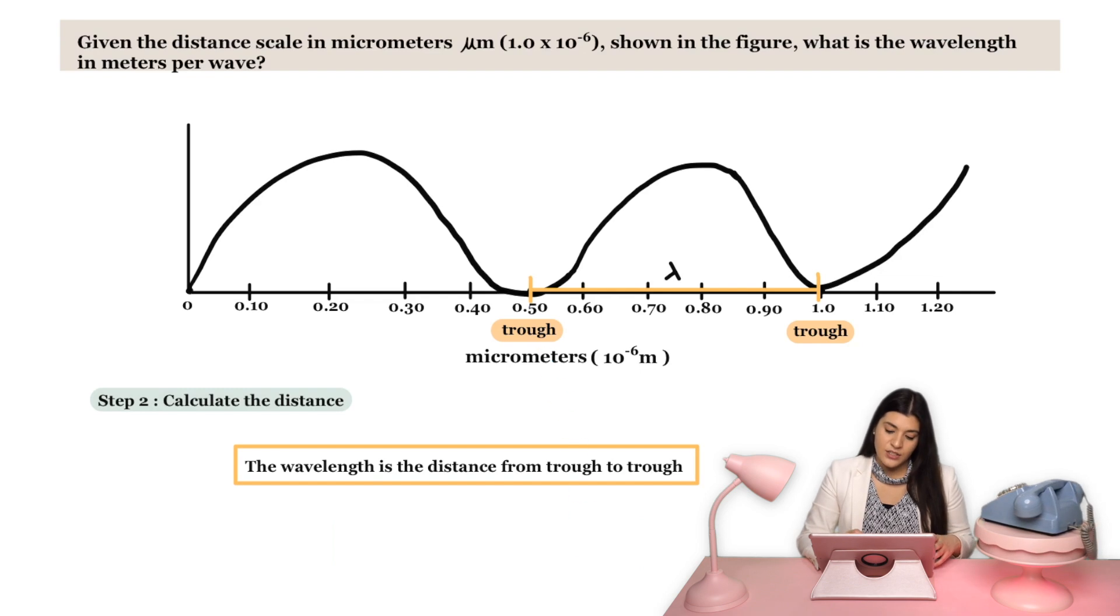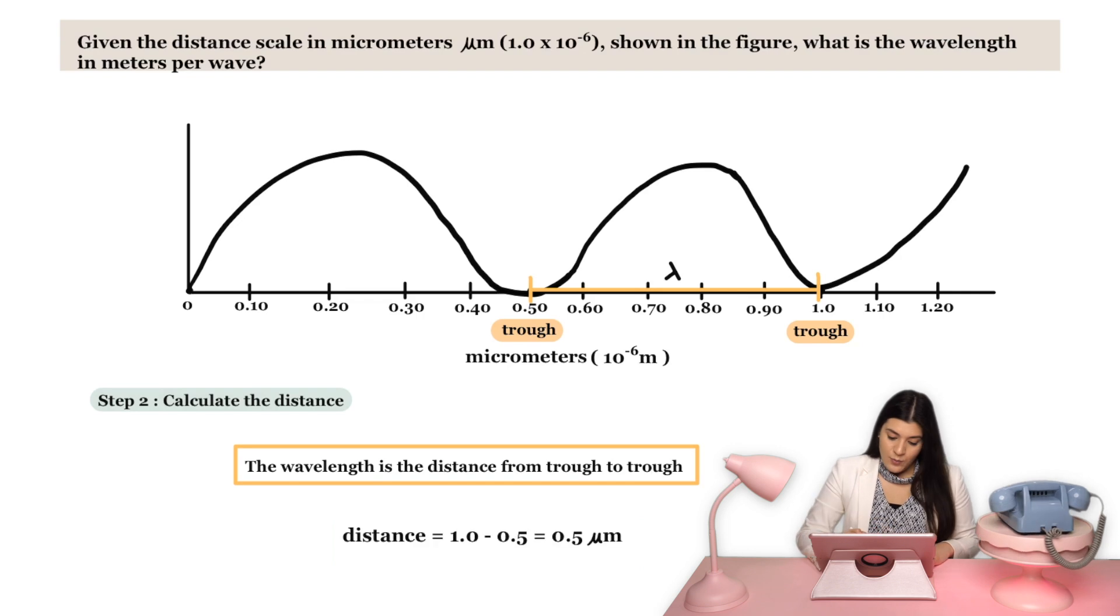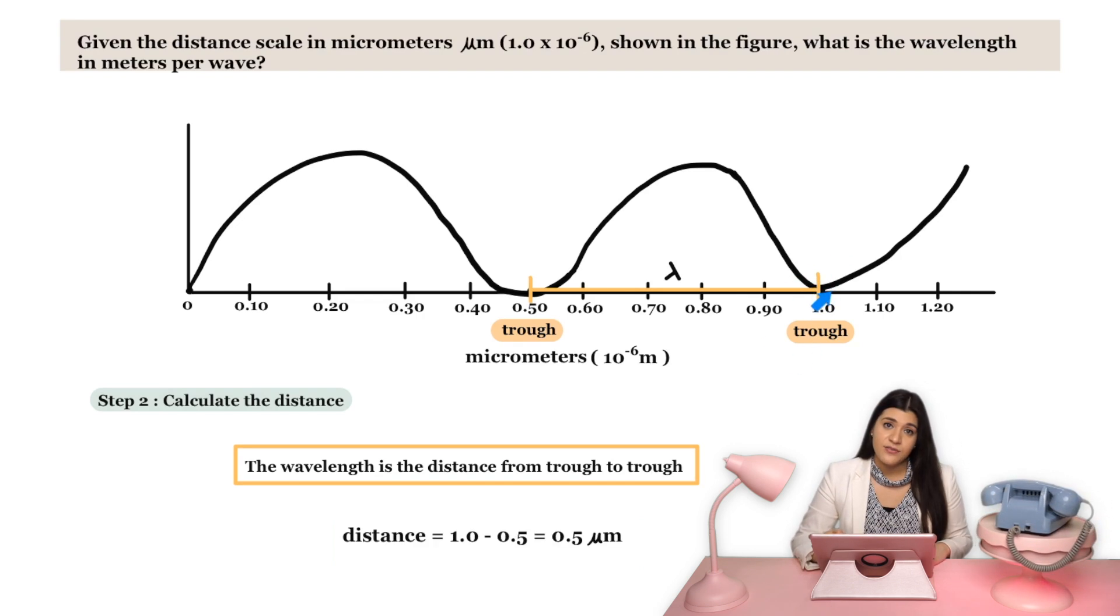I decided let's just look at the distance from trough to trough. So let's calculate the distance, that's the second step. And what I'll do is I'll start off with 1 and I'm going to subtract this to figure out the overall length or wavelength overall.